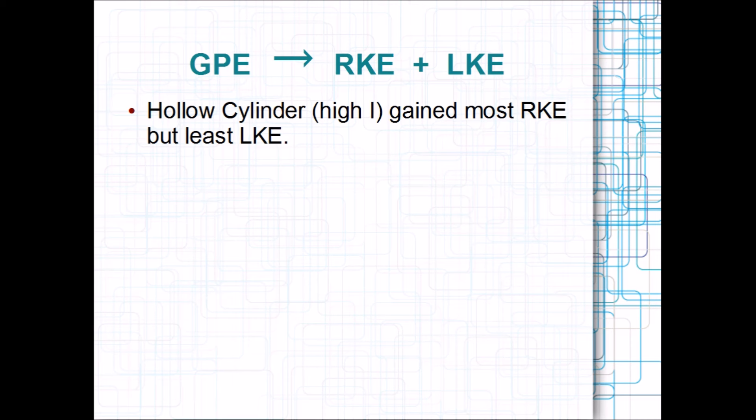Now, linear kinetic energy is what you learned about in previous years. It's the energy associated with moving in a straight line. And in order to get down the hill fastest, you have to move in a straight line the fastest.